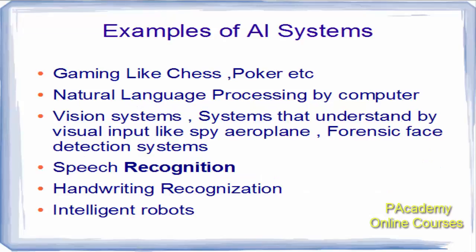Examples of AI systems: games like chess and poker which can respond like humans in playing a particular game. Another example is natural language processing, computer vision systems that understand visual input — such as spy airplane recognition or face detection systems which can identify persons from a database. Other examples include speech recognition, handwriting recognition, and intelligent robots which can perform certain functions done by humans.